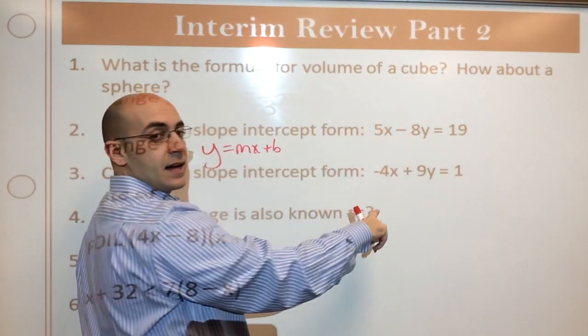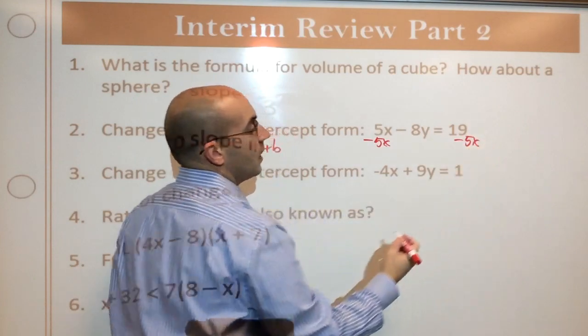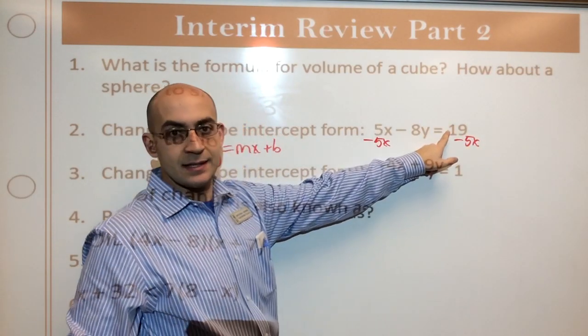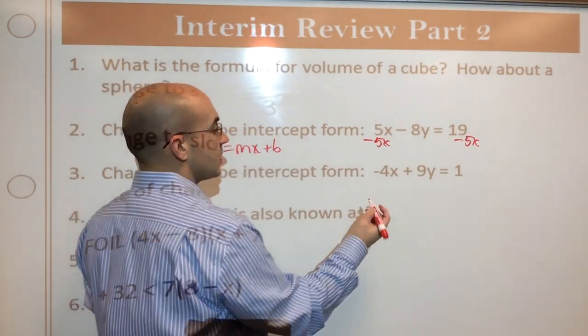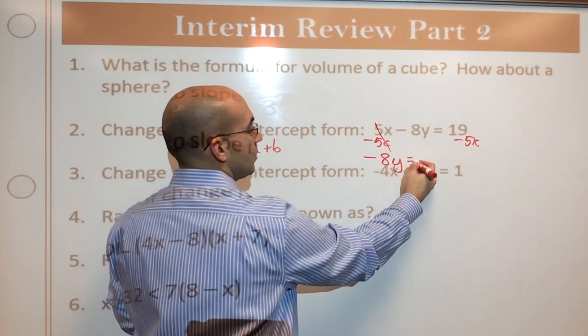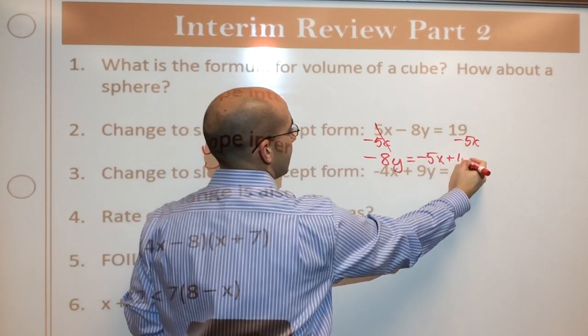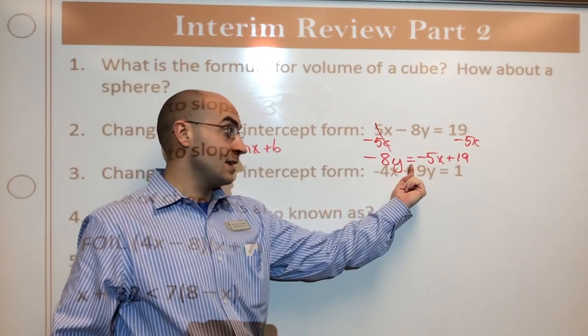So I've got to get y completely by itself. First step here is I've got to get rid of this 5x. So I'm going to minus 5x on both sides. Now, no, I can't subtract 5x from 19 because they're clearly not the same term or same type of term.